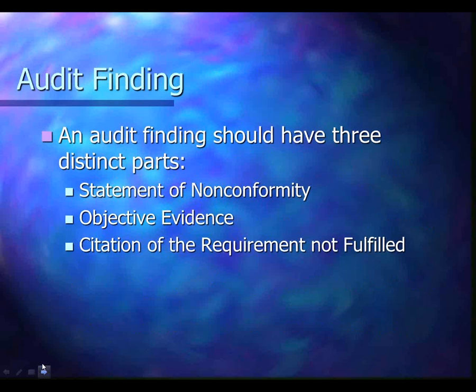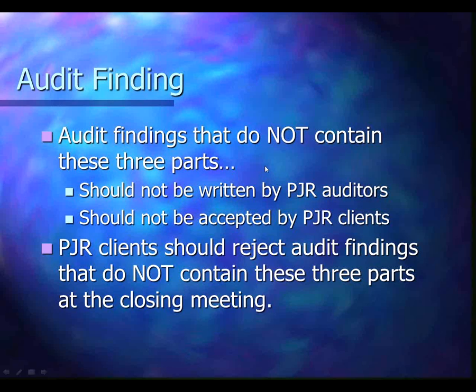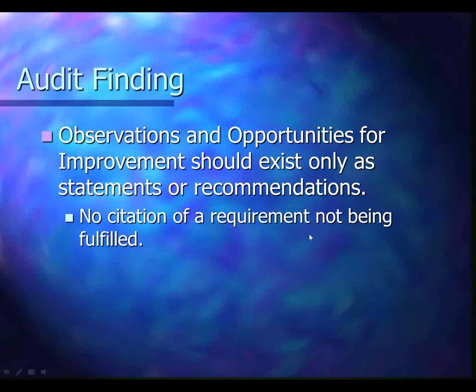A well-written audit finding should have three distinct parts: first, the statement of non-conformity; second, objective evidence; and third, a clear citation of a specific requirement not being met. Audit findings that do not contain these three parts should not be written by PJR auditors — and you clients are empowered to reject them. If the auditor documents an opportunity for improvement, it should exist only as a statement or recommendation because it's not a non-conformity. If a requirement should be cited, then it's a non-conformity being inappropriately classified as an opportunity for improvement.